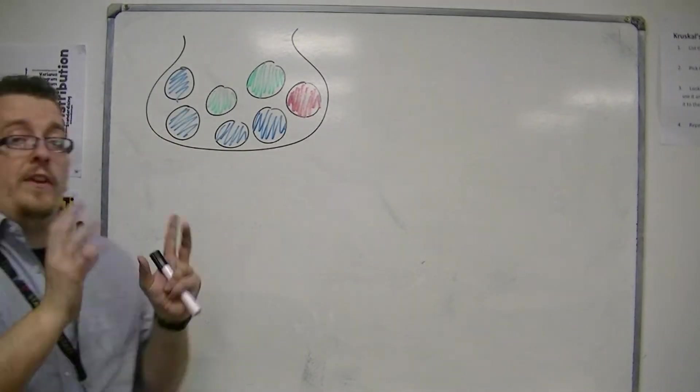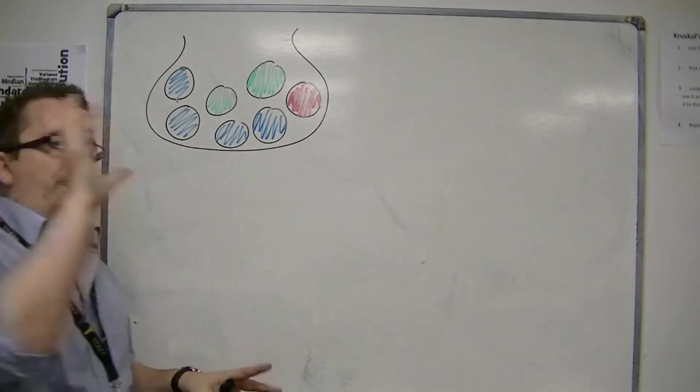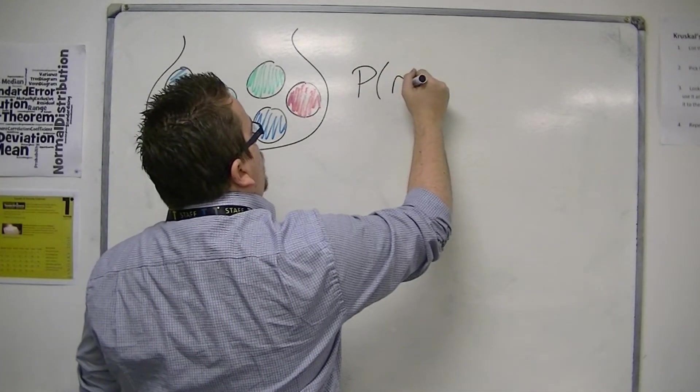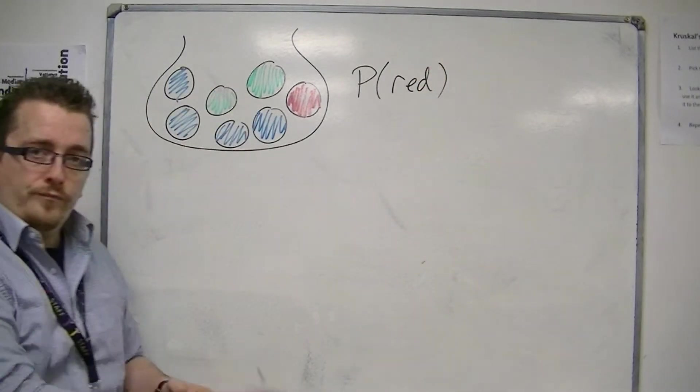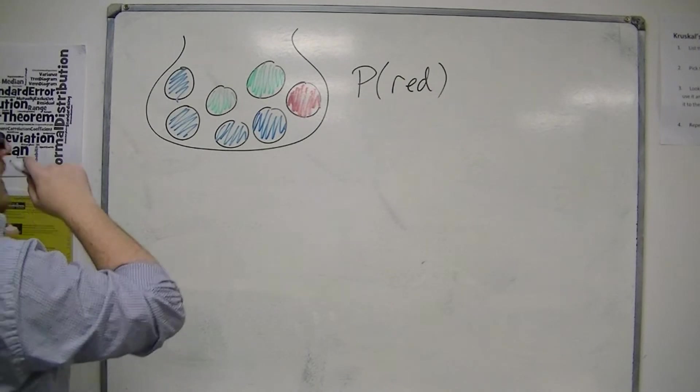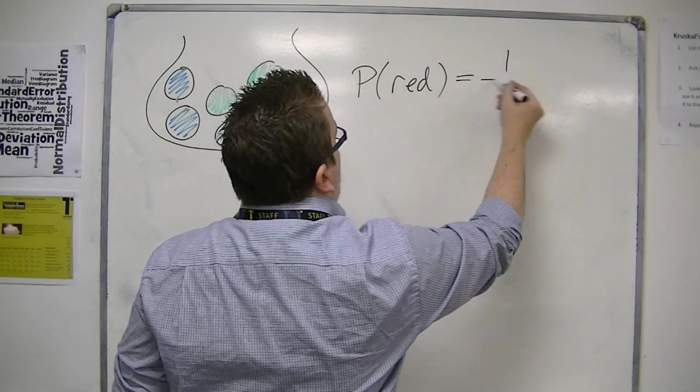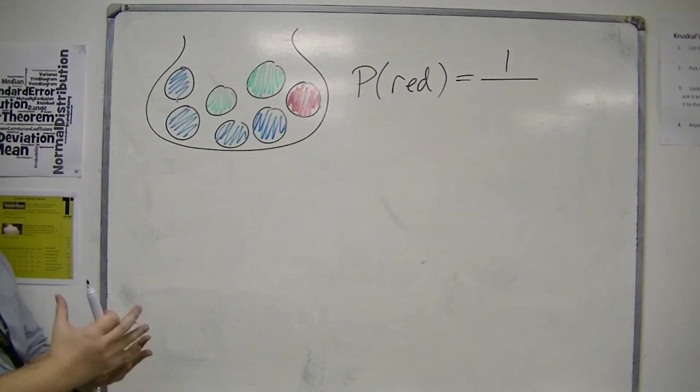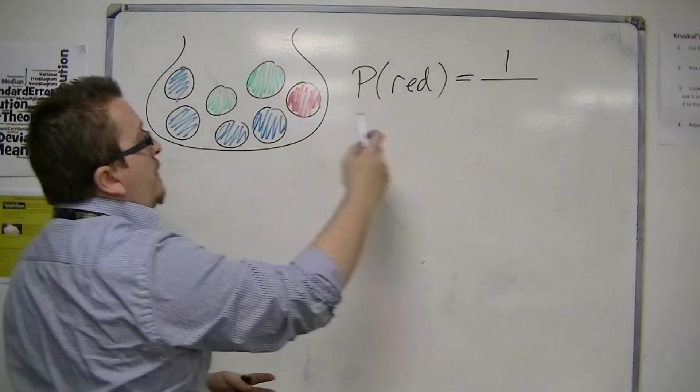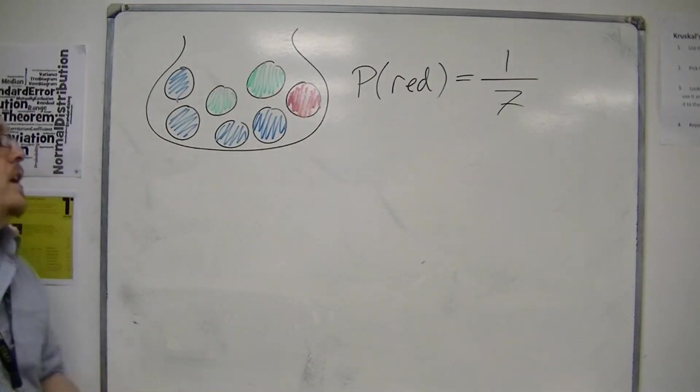So let's then say I put my hand into the bag and I'm looking for the probability that I pull out a red ball. Well, if I look at what's in the bag, I only have one red ball. So there's only one possibility out of a total number of 1, 2, 3, 4, 5, 6, 7 balls. And so the probability would be 1 out of 7 for picking a red.